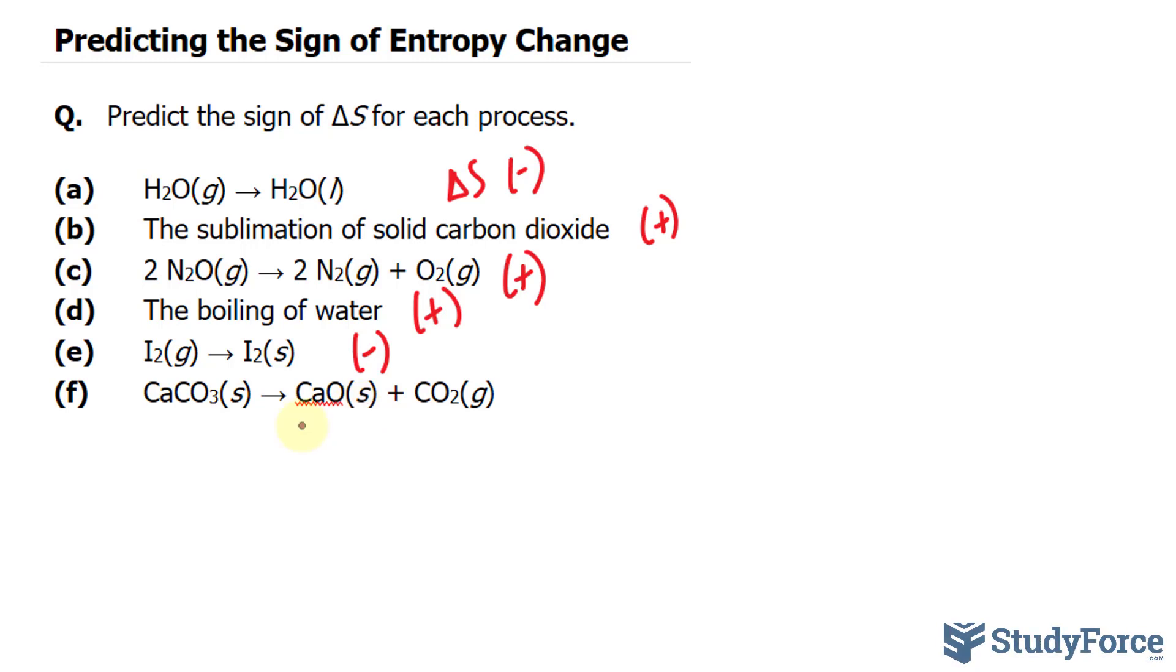Finally, in F, a solid forming a solid and a gas. Originally, we had one molecule, all compact. In the products, we have a solid and a gas. So it's becoming less orderly, and so it's positive.